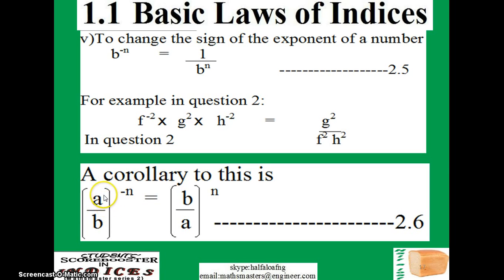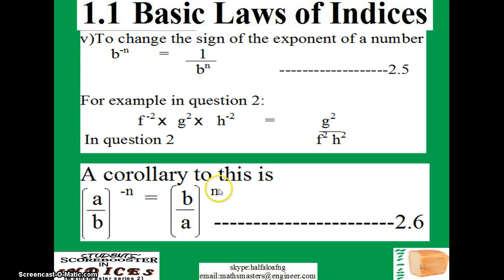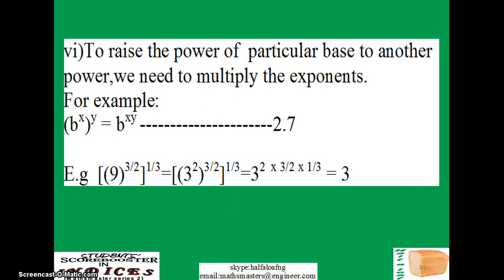We have a corollary to this law, and this is especially very beneficial for those who will be sitting for JAMB/UTME. If you have (a/b) raised to power minus n, all you need to do is interchange the bases — make a the denominator and b the numerator — and by doing that the sign changes from negative to positive.